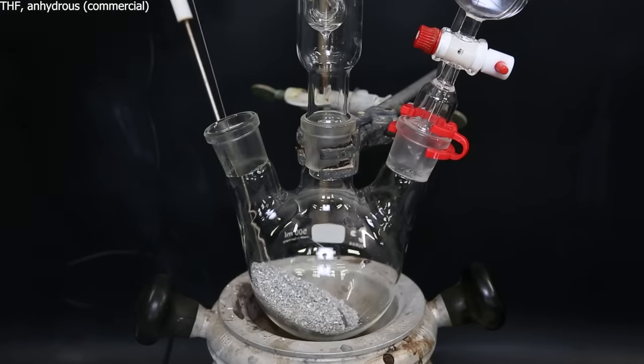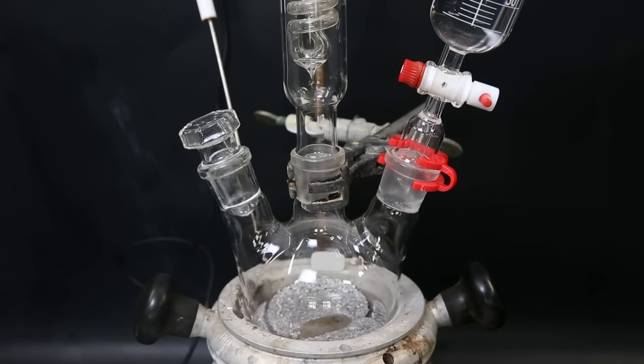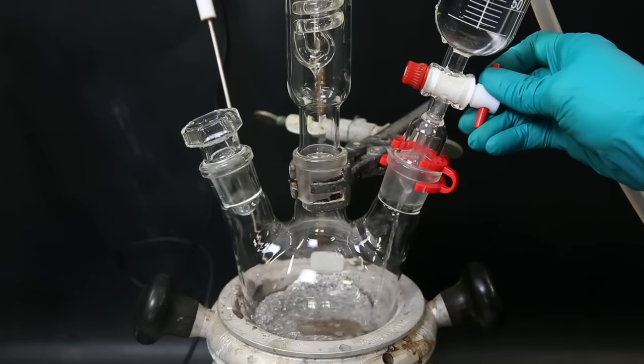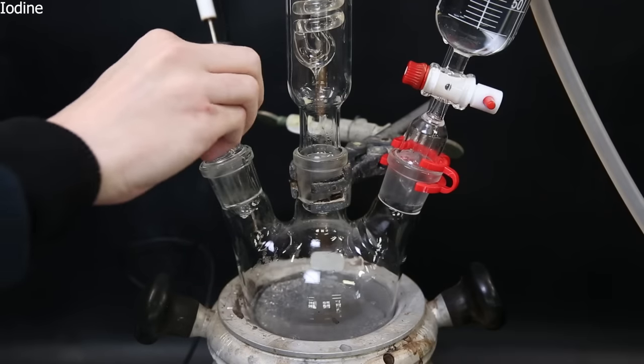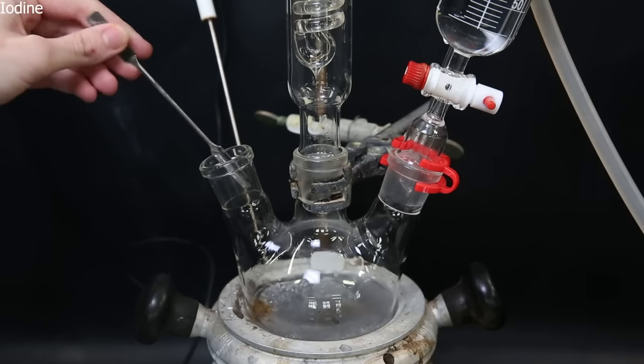I cover the magnesium with a bunch of anhydrous THF and then flush the flask with argon. I stopper the left neck and then set the flask in the heating mantle and start heating it. I open the dropping funnel to let some of the mixture into the flask, and then add some iodine to remove magnesium oxides from the surface of the metal and expose fresh magnesium.